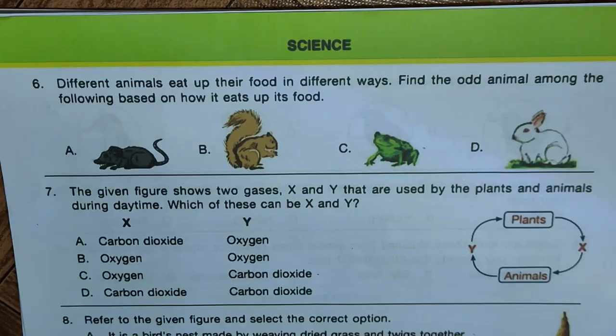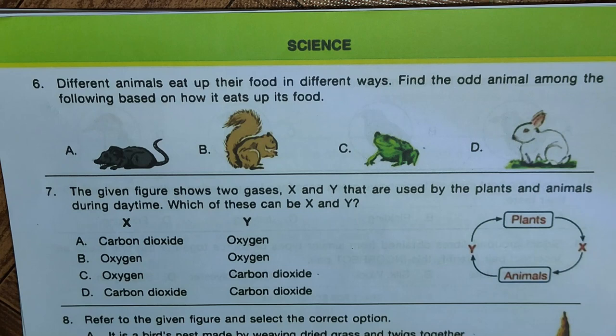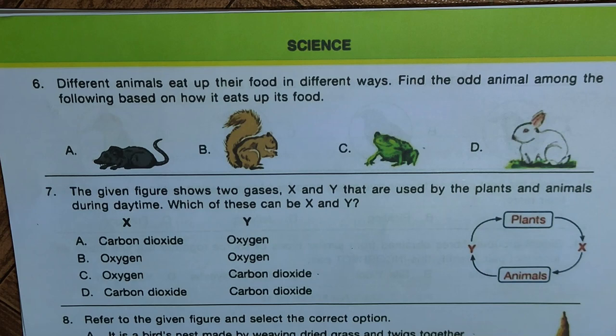Question six: different animals eat their food in different ways — find the odd animal among the following based on how it eats. The animals are a rat, a squirrel, a frog, and a rabbit. Options A, B, and D — the rat, squirrel, and rabbit — actually nibble their food; they bite and chew it. Option C, the frog, swallows its food whole. Hence C is the odd one out and the answer.